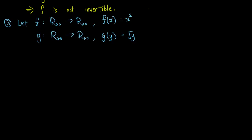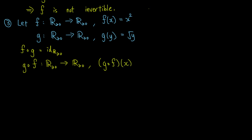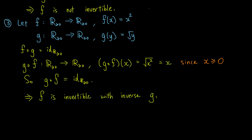As a third example, we also restrict the domain of g to the non-negative real numbers. Now f ∘ g is the identity function on the non-negative reals, and g ∘ f is a function from the non-negative reals to itself, defined by (g ∘ f)(x) equals the square root of x squared, which equals x since x is non-negative. So g ∘ f is the identity function on the non-negative reals. So f is invertible with inverse g.